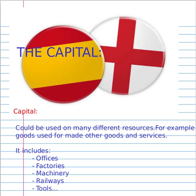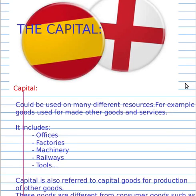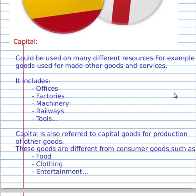First of all, we must know that capital is not only money. Capital could be used in many different resources. For example, goods used to make other goods and services. Capital includes offices, factories, machinery, railways, and stores.